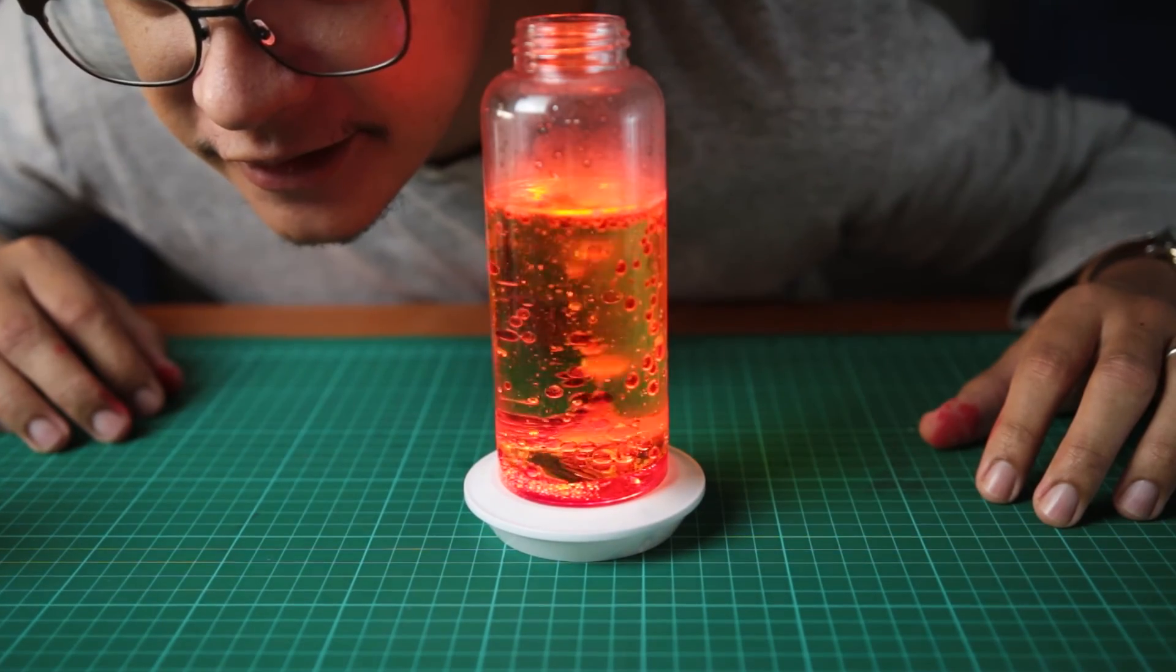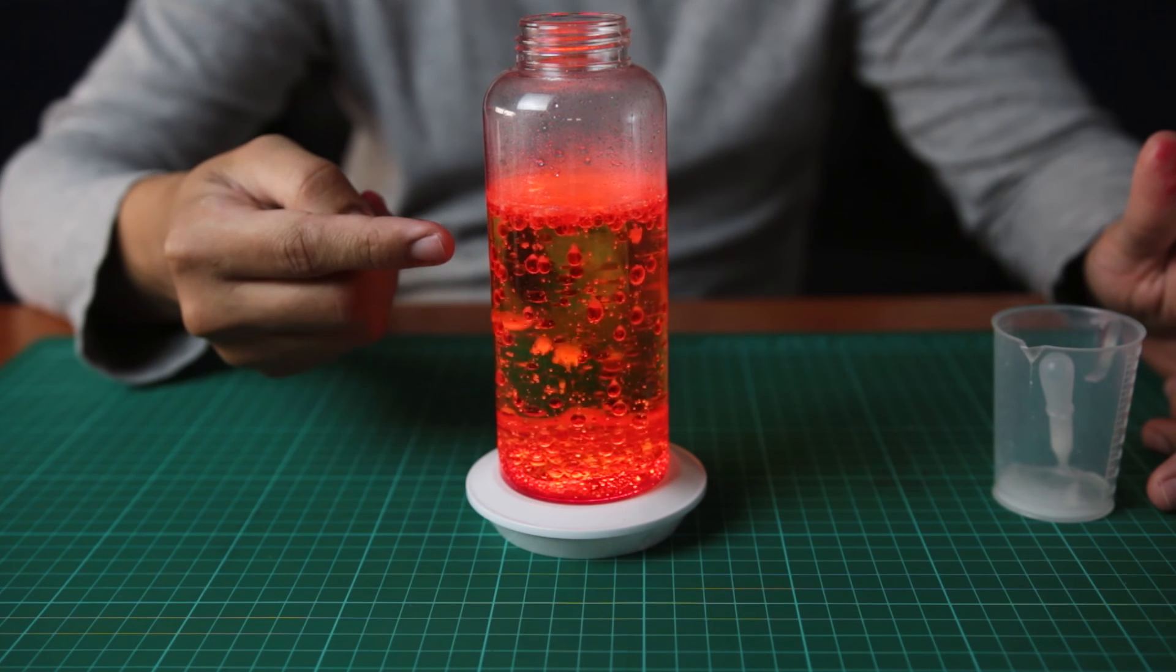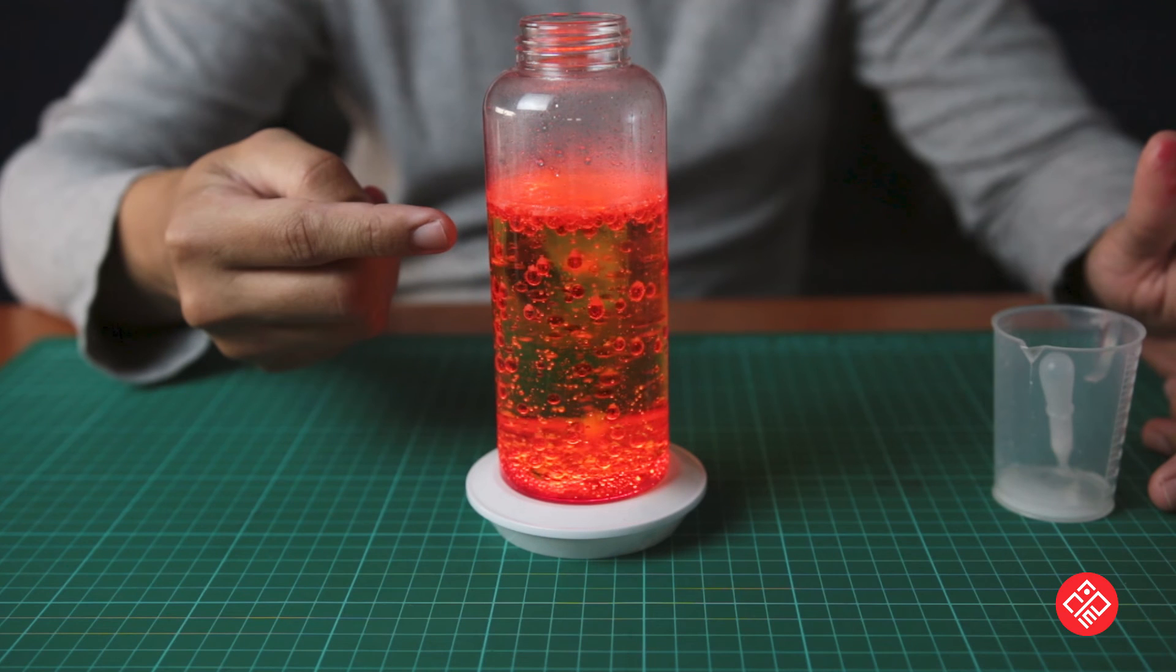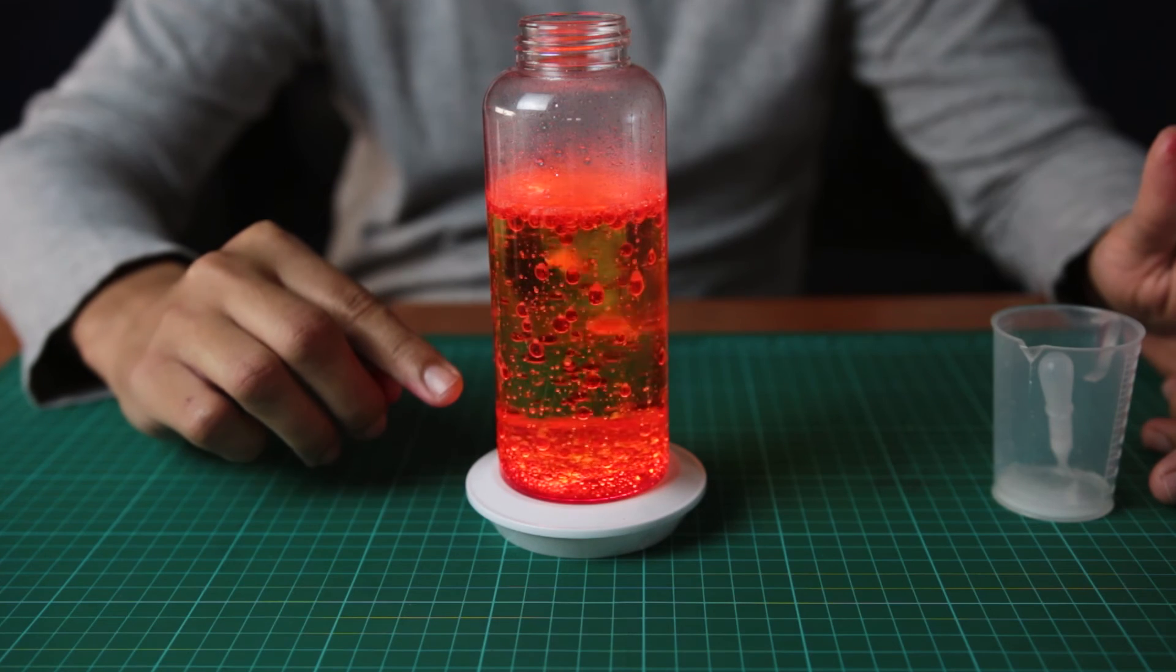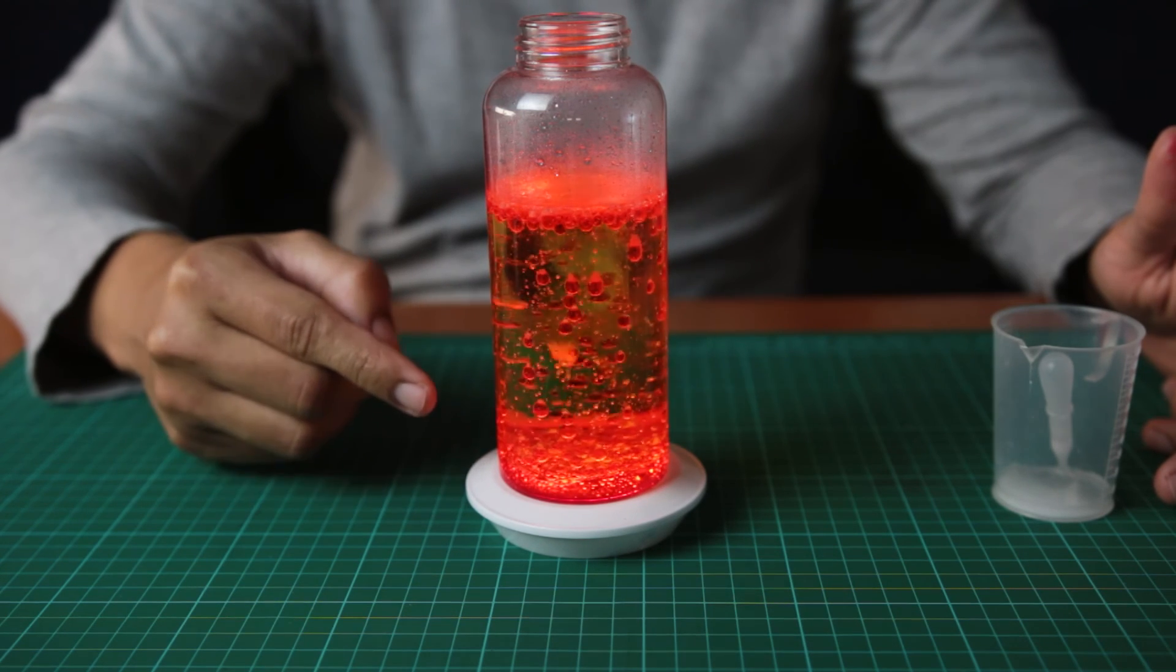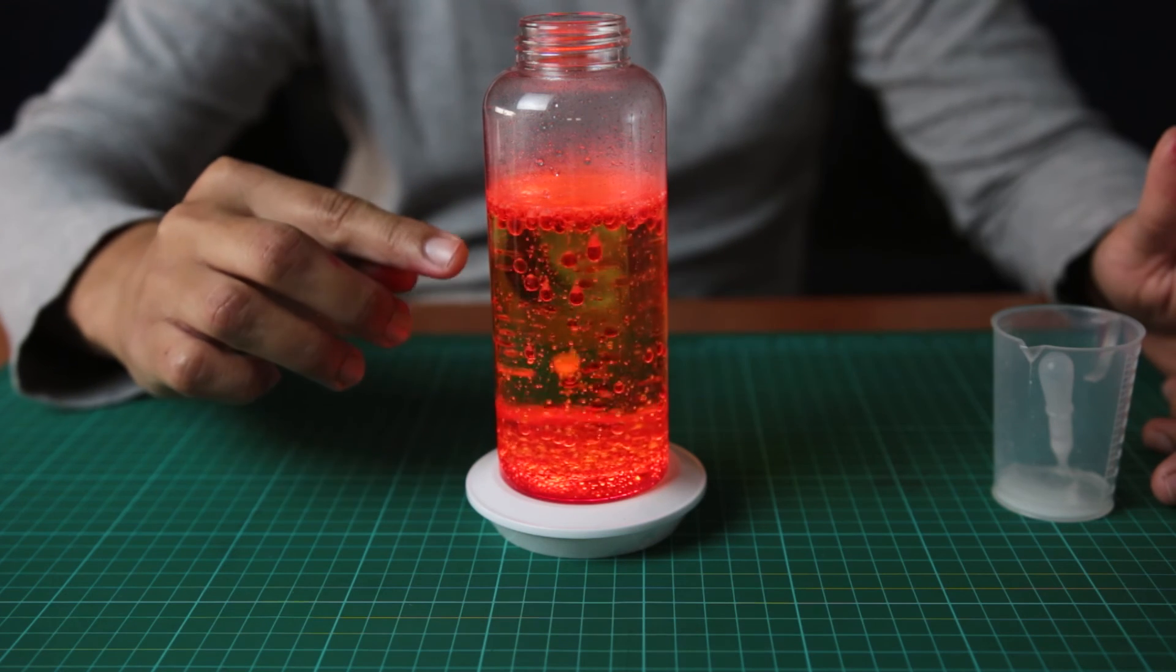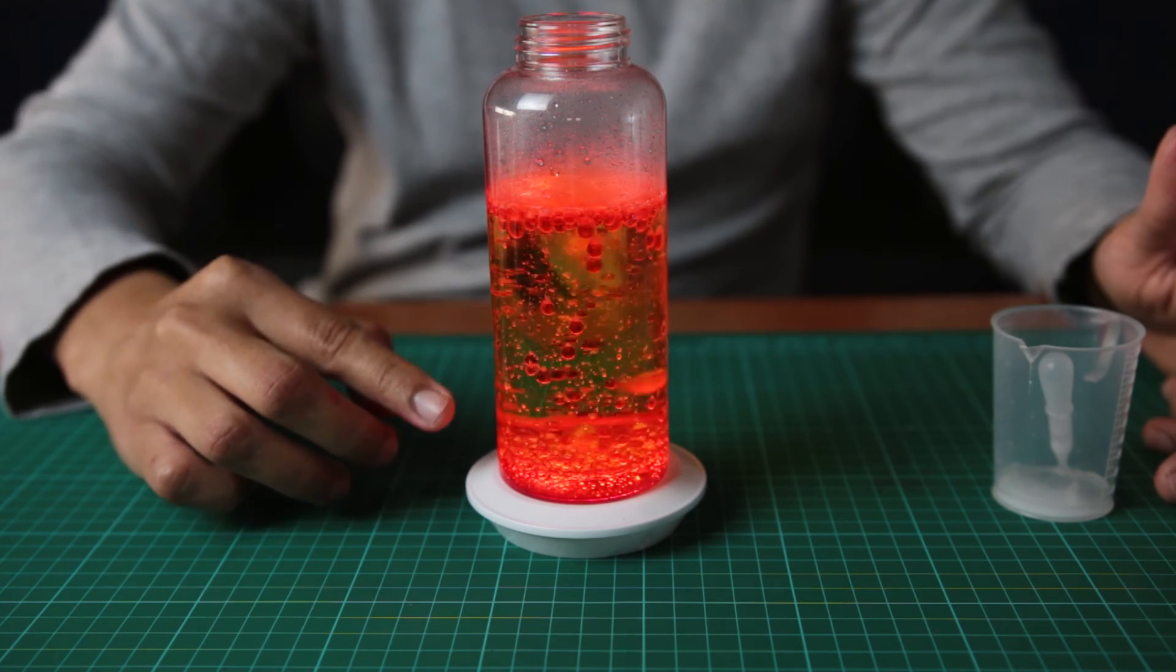Much better. So what's happening? Once the bubble reaches the surface, the carbon dioxide escapes into the air. And the food coloring, which is left behind, becomes denser than the oil again and sinks to the bottom. This continues to happen until all the baking soda is used up.